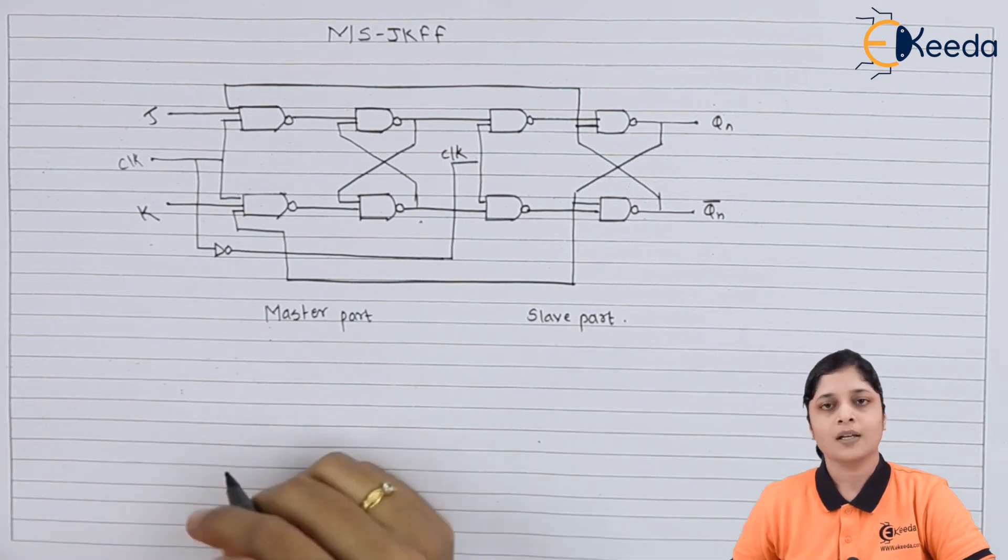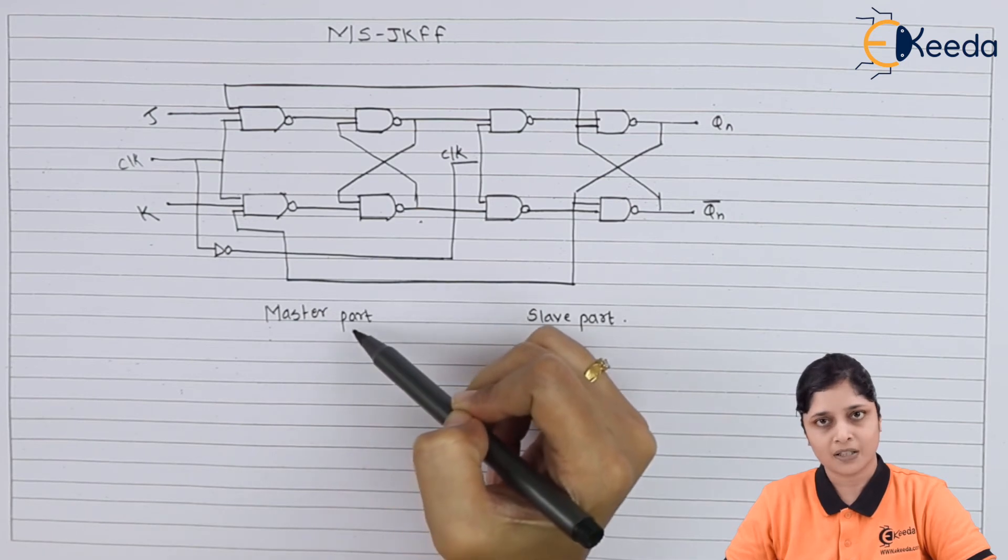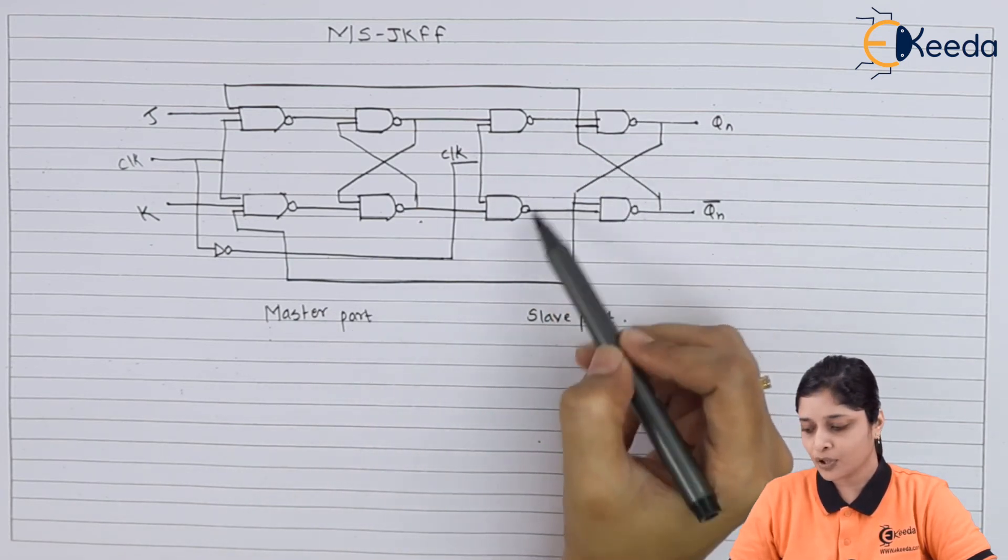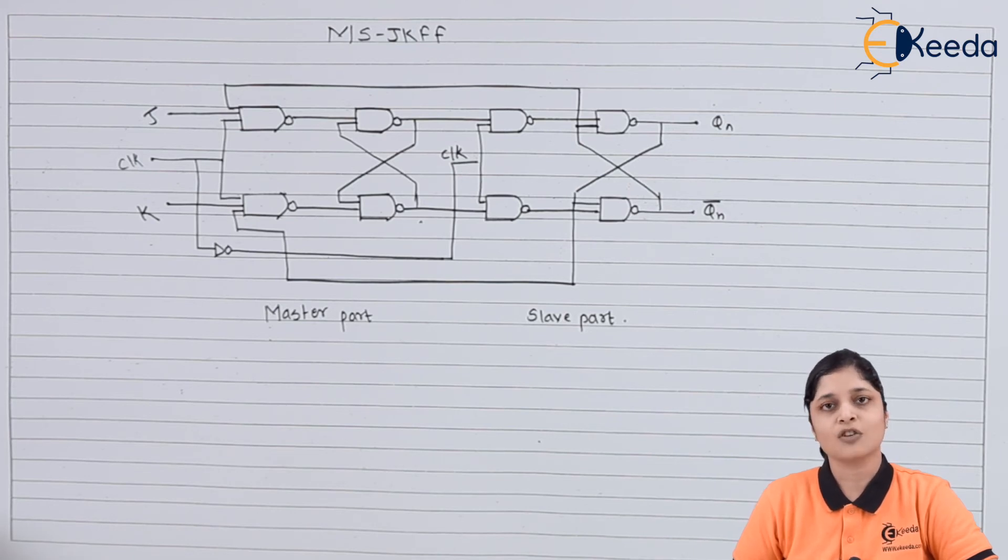We have used four NAND gates for the master part and again four NAND gates for the slave part. The operation is the same as the JK flip-flop. This is all about the master-slave JK flip-flop.